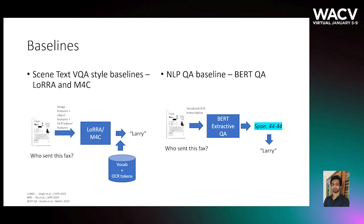We also use a reading comprehension model, which is a BERT question answering model from the NLP space. The baseline is developed for reading comprehension on datasets like SQuAD. Since this model requires a text passage, we serialize the OCR tokens recognized from the documents in the conventional reading order, that is from top-left to bottom-right. Since the model is suitable for passages, text serialization would not yield passage-like content on documents with structures such as tables, forms, or figures. Nevertheless, we serialize the text in the reading model.